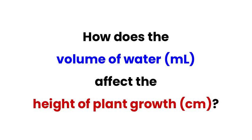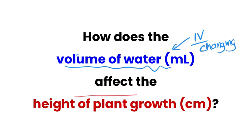So let's start out and take a look at an example scientific question. How does the volume of water affect the height of plant growth? Remember from previous videos that our independent variable, or what we are changing, is listed first in our question. So in this experiment, we would be changing the volume of water. And then that is going to affect the height of plant growth. So this is our dependent variable, or what we are measuring.